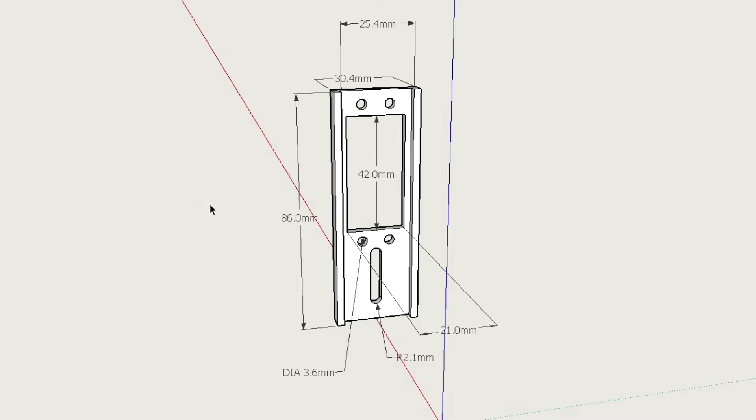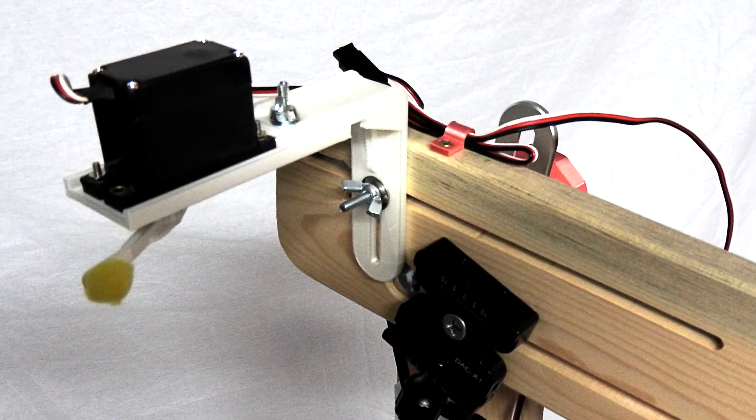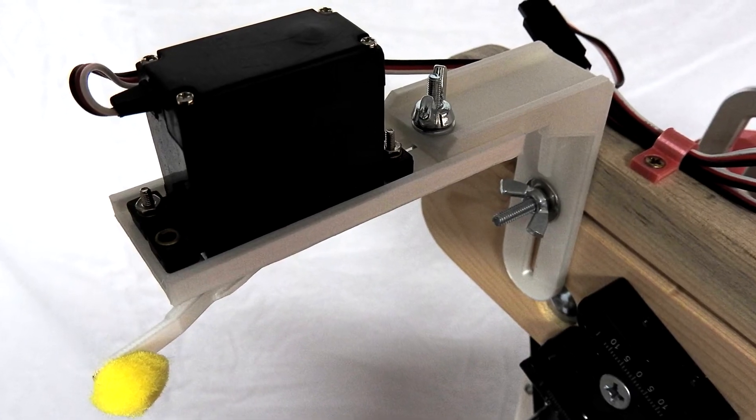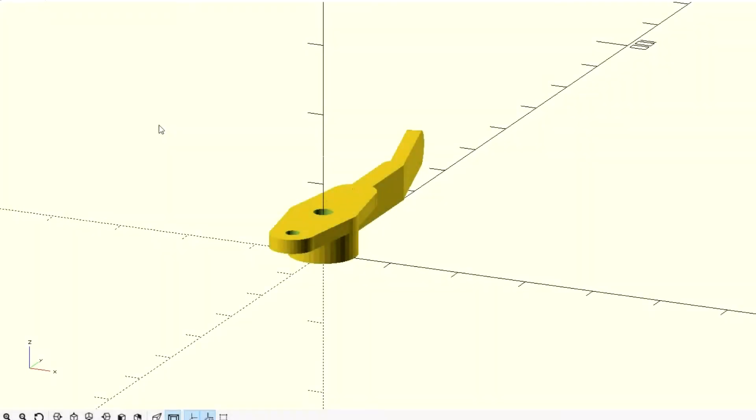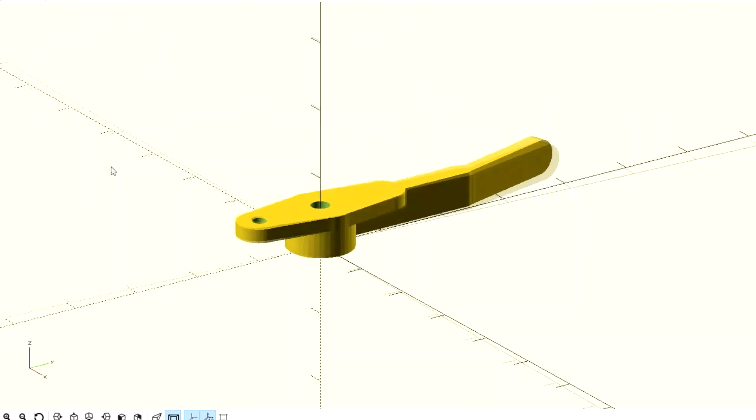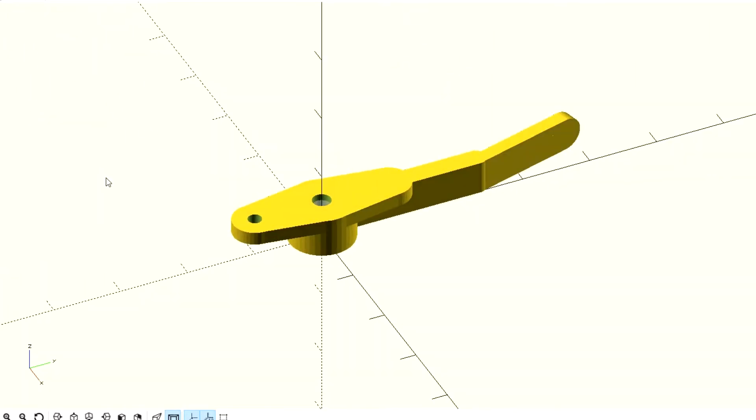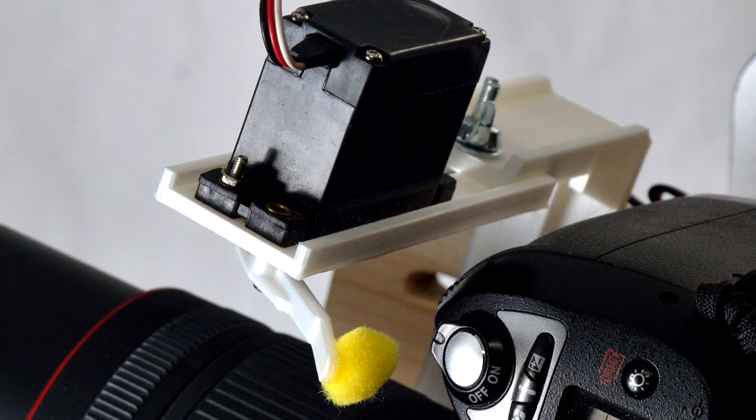This is for an older Futaba servo, so you may have to modify it to fit your servo. The servo arm attaches to the servo to trigger the shutter. Again, this is for the Futaba servo and may need modification for your servo. The included design was done with OpenSCAD and can be modified to fit your needs.